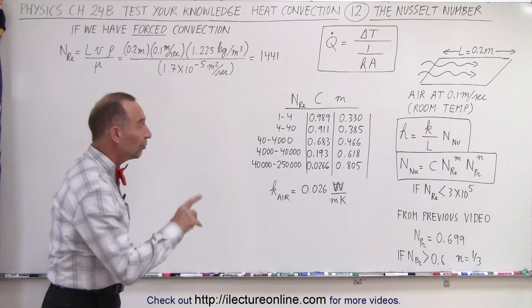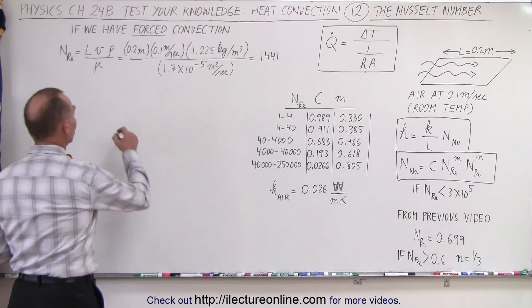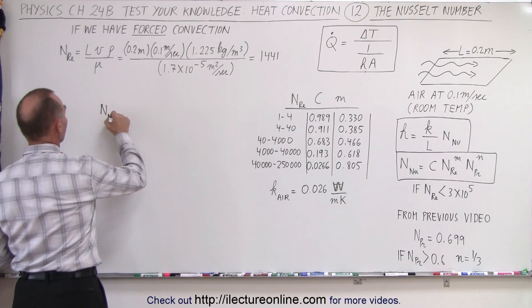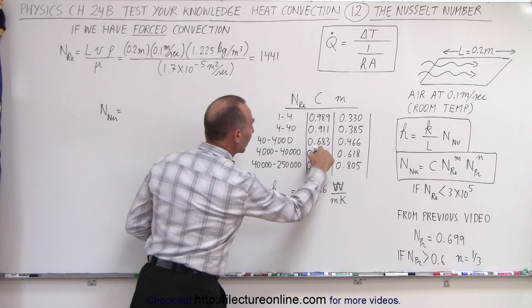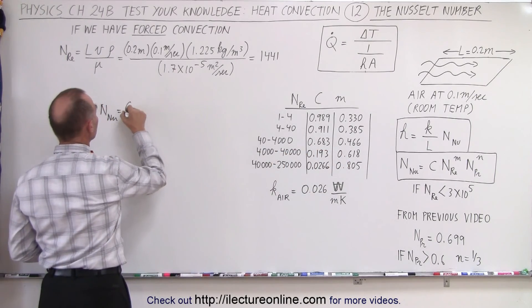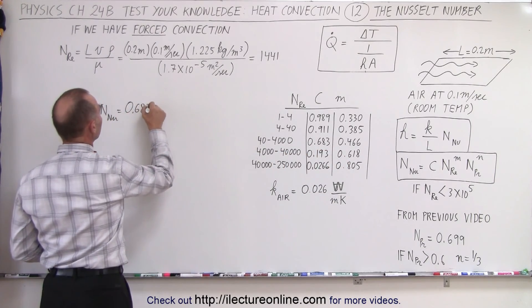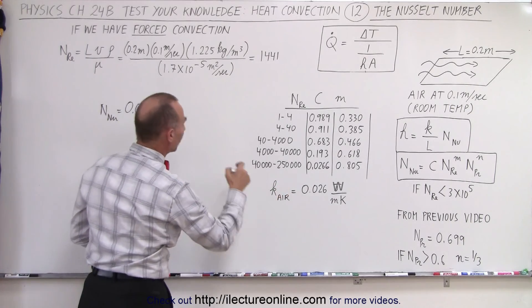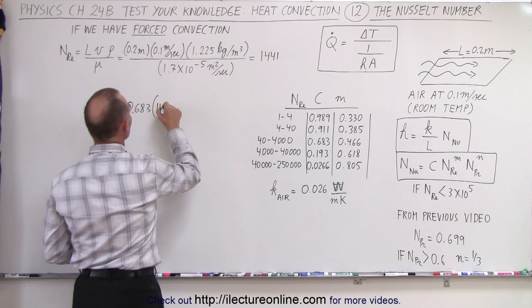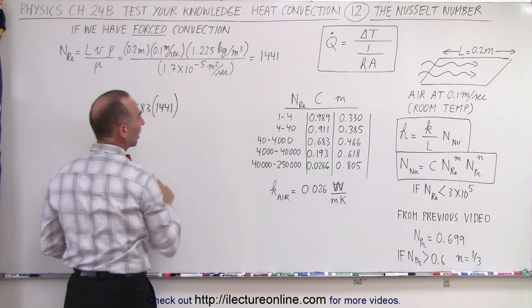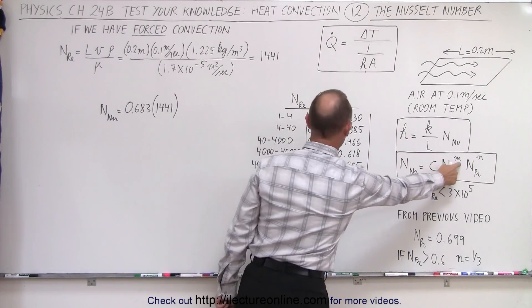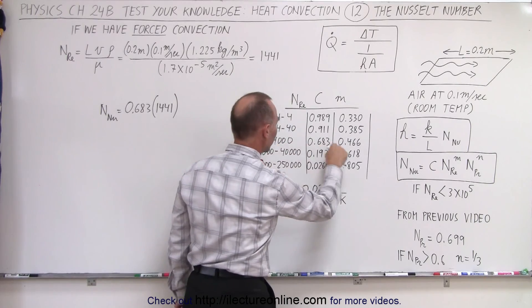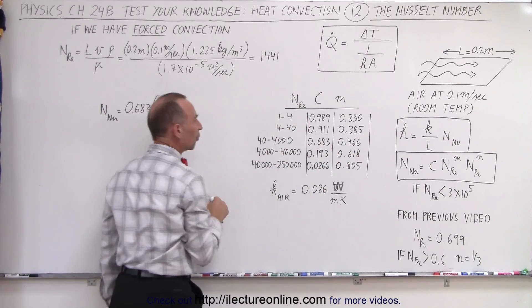We're now ready to calculate the Nusselt number. So the Nusselt number is equal to the constant which we determined to be, right here, 0.683, multiplied times the Reynolds number, which is 1441. We have to raise that to the m power. The m power right here is determined by what the Reynolds number is, so 0.466.